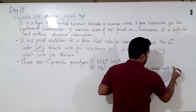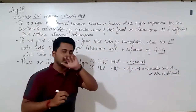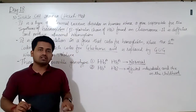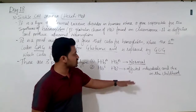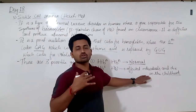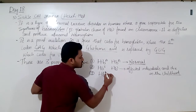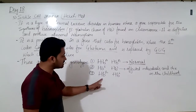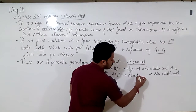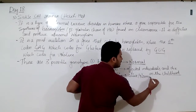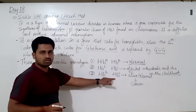HBS/HBS individuals die in childhood only, because the sickle-shaped RBCs cannot carry oxygen properly. Such individuals suffer from suffocation due to insufficient oxygen in the body. The third case is the heterozygous case: HBA/HBS. Since it is a recessive disorder, this person is alive and normal, but is a carrier for the disease.